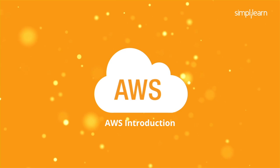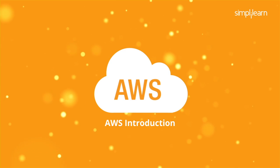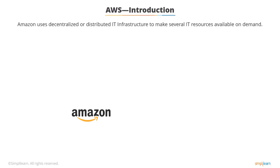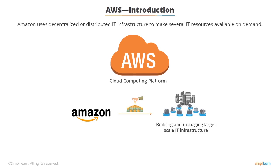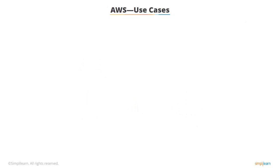In this topic you will learn about Amazon Web Services, or AWS. Amazon uses decentralized or distributed IT infrastructure to make several IT resources available on demand. Since the 1990s, it has invested millions of dollars in building and managing large-scale distributed and efficient IT infrastructure. Amazon launched AWS, a cloud computing platform, to allow other organizations to take advantage of this reliable IT infrastructure.